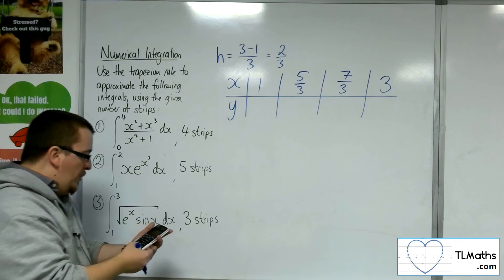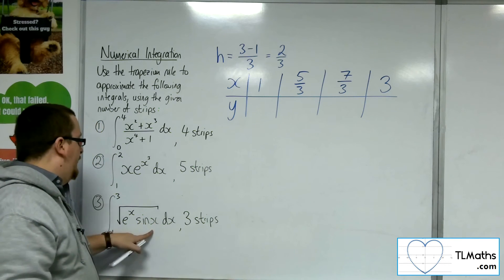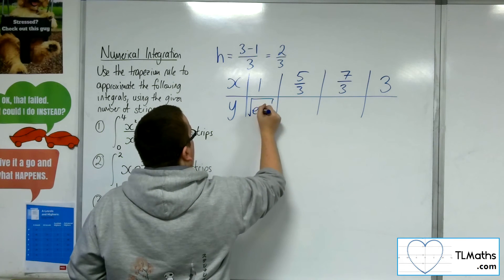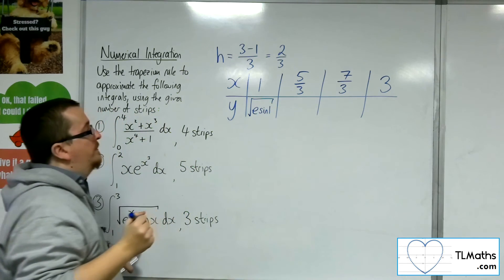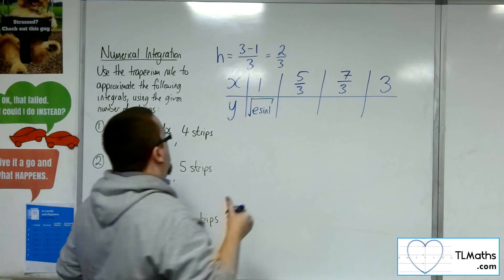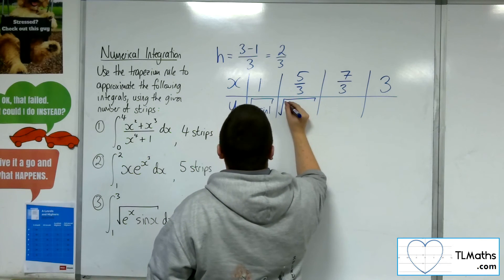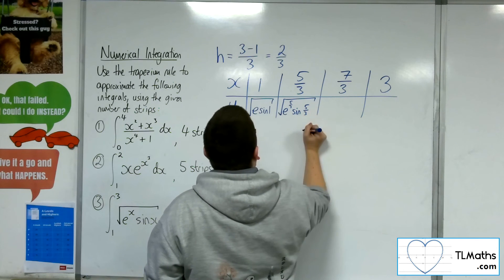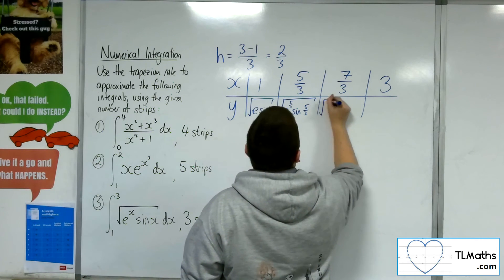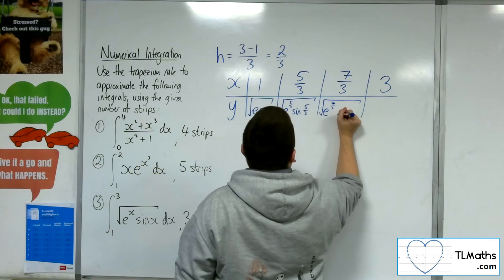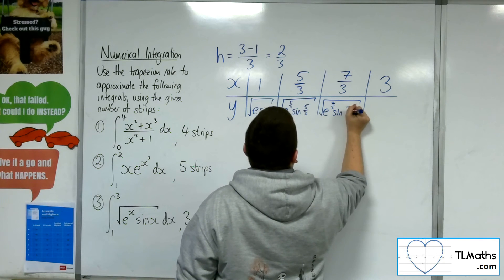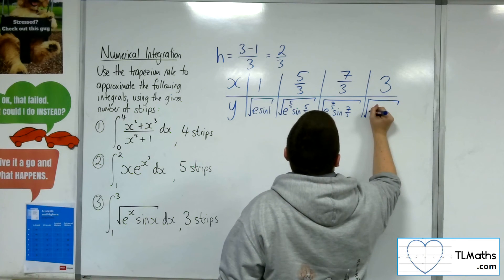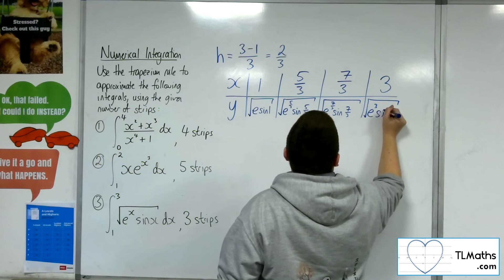So we've got 4 y ordinates defined. So substituting in 1, remember you've got to be in radians here. We've got a sine involved. So we've got the square root of e sin 1. Then we've got the square root of e to the 5 thirds sin 5 thirds. And then we've got the square root of e to the 7 thirds sin 7 thirds. And then we've got the square root of e cubed sin 3.